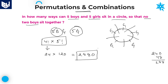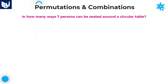Whenever no two boys sit together, first arrange the remaining persons, then place the boys between the girls — this satisfies the condition. The required answer for this question is 2880.